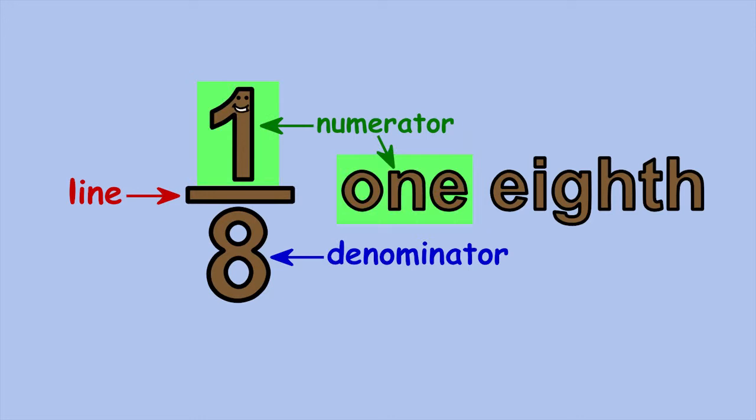The first part of my name is just the name of the number that's my numerator, one. And the last part of my name comes from my denominator.